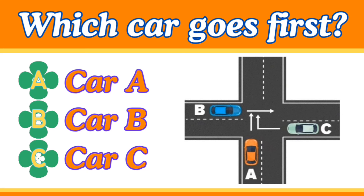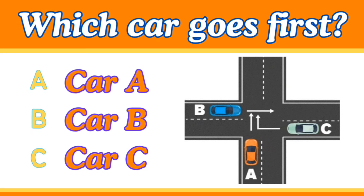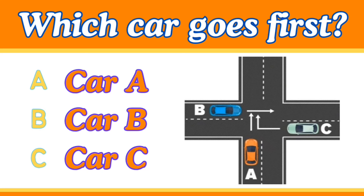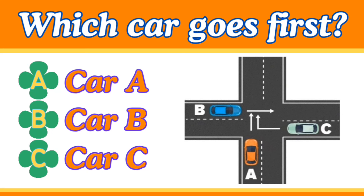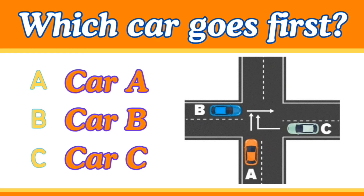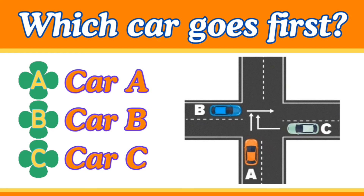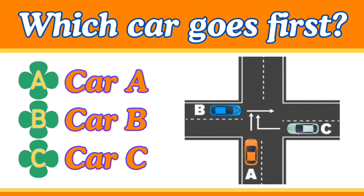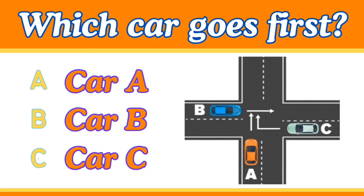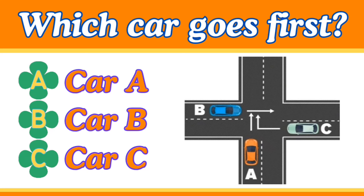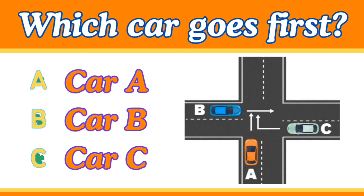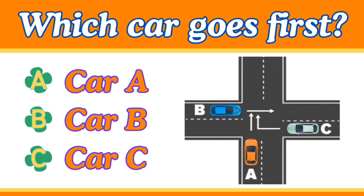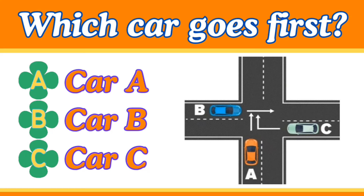So to answer this question: car B should yield right of way to car A, and car A should also yield right of way to car C. Car C is the only car with nothing approaching from its right, so it has the right of way. However, car C intends to make a right turn in front of oncoming traffic, which would be breaking a road rule.